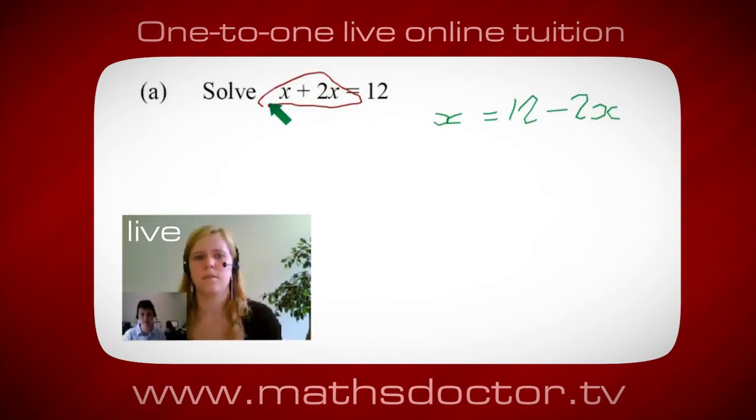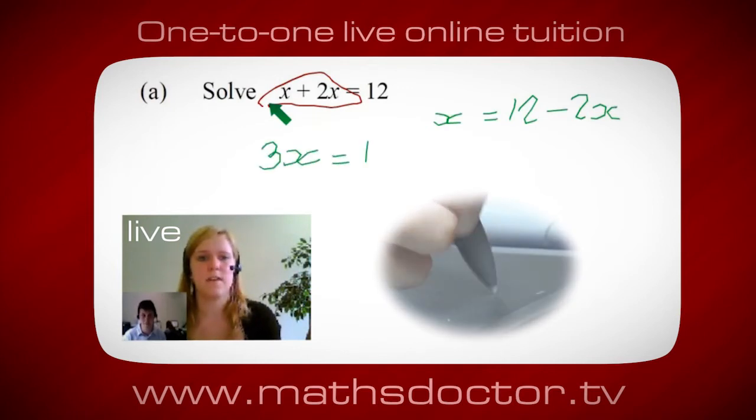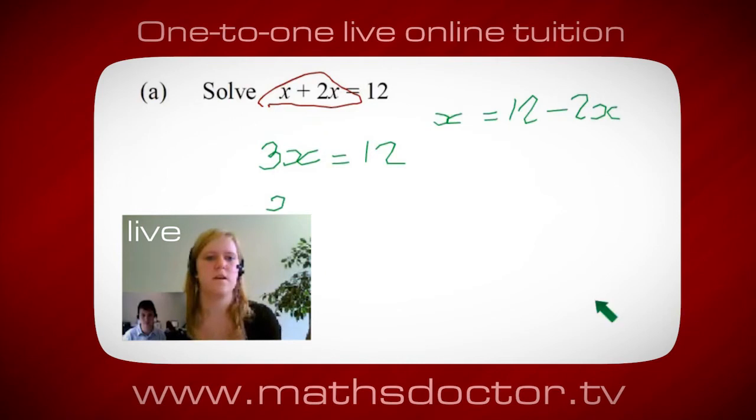Okay, it's 3x isn't it? Yeah, absolutely. 3x equals 12, oh and so x equals 4. Brilliant, spot on, well done.